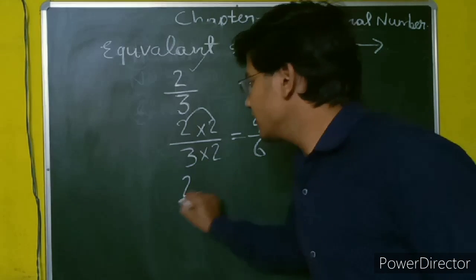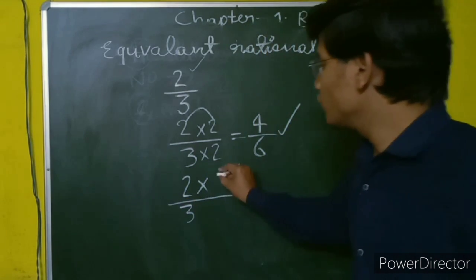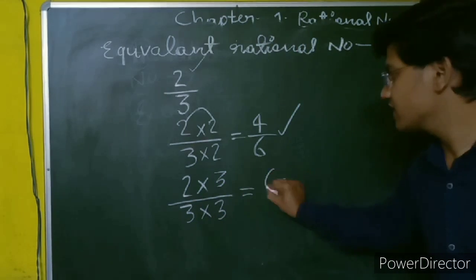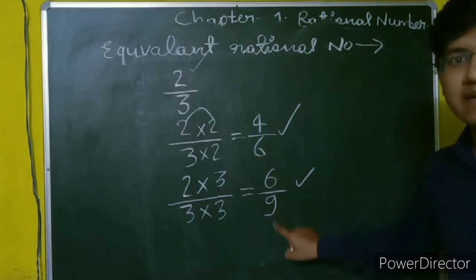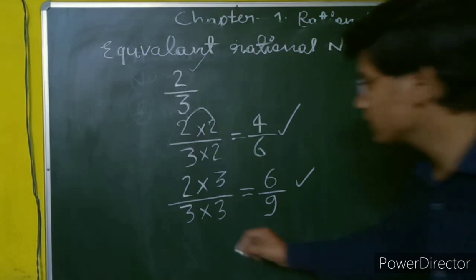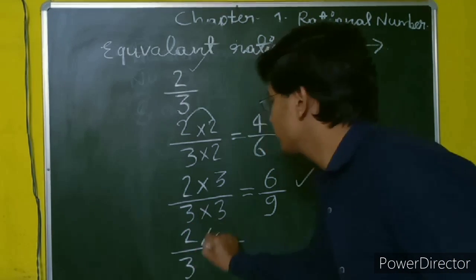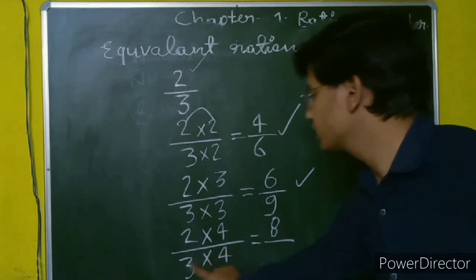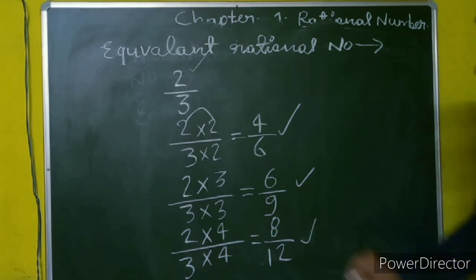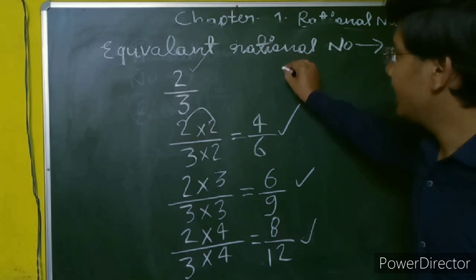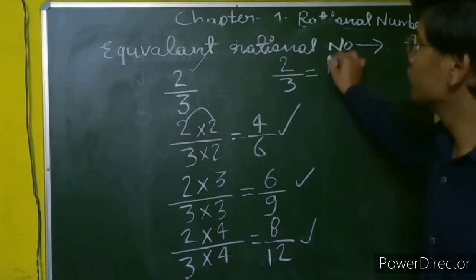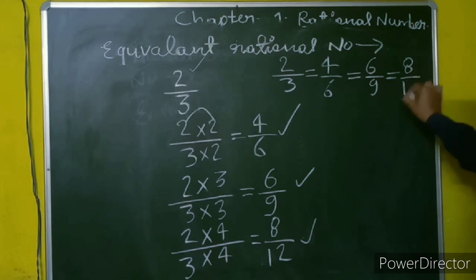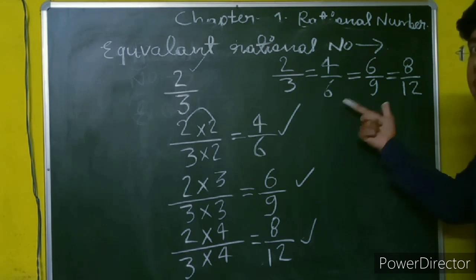Continuing with 2 upon 3: if we multiply numerator and denominator by 3, we get 6 upon 9, which is also an equivalent rational number. If we multiply by 4, we get 8 upon 12, which is also an equivalent rational number. So we can write: 2 upon 3 equals 4 upon 6 equals 6 upon 9 equals 8 upon 12. These are known as equivalent rational numbers.